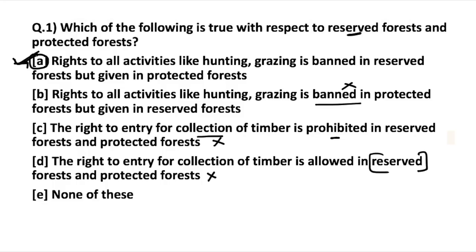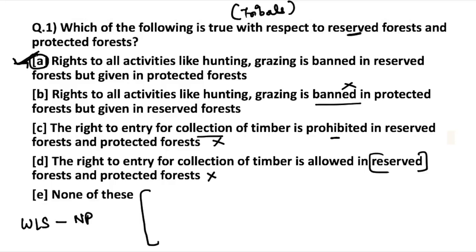So the answer to this question is the first statement. The reason is that in protected forest, rights are sometimes given to communities — if there are tribals living in that area, they are given rights to activities like hunting and grazing because they sustain their livelihood from these forests. Now, reserve and protected forests work on an upgradation basis — they get upgraded to wildlife sanctuaries and then to national parks. A very famous example is the Sariska National Park.